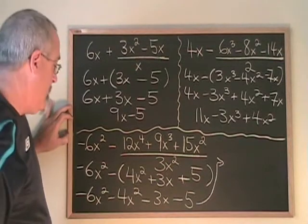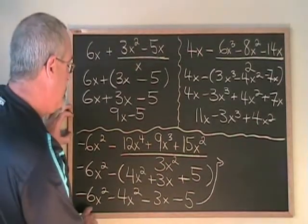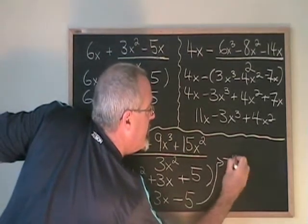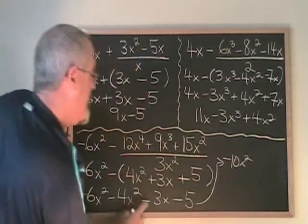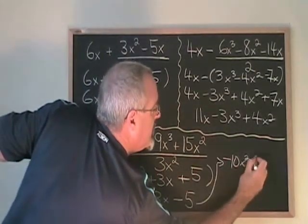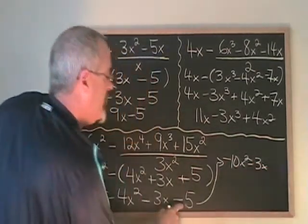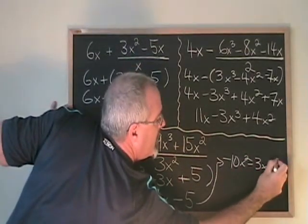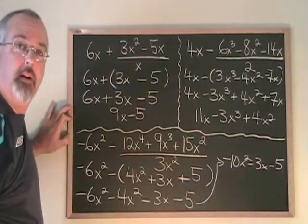Combining similar terms, I can give my final answer. Minus 6x squared minus 4x squared is equal to minus 10x squared. There's only one x term, which is minus 3x. And there's only one constant term, which is minus 5. There's my final answer.